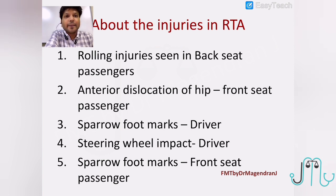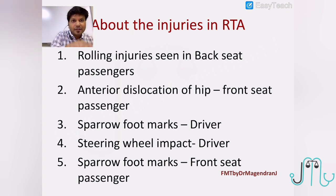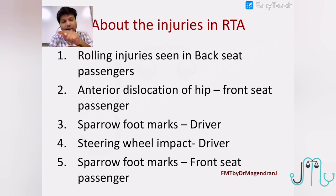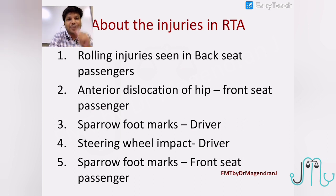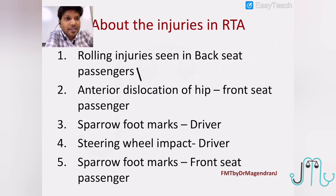About injuries in RTA — rolling injuries seen with backseat passengers is false. Rolling injuries are seen with pedestrians hit by a vehicle with a low chassis. When a vehicle with a low chassis hits a pedestrian, the pedestrian will be rolled on the road suffering circumferential injury all over the body — that's called a rolling injury, which is seen with pedestrians, not with backseat passengers.